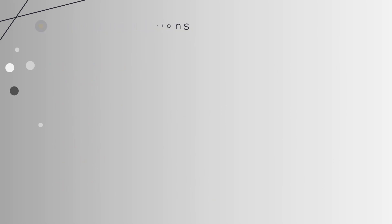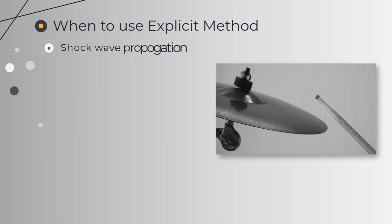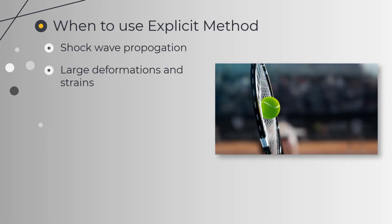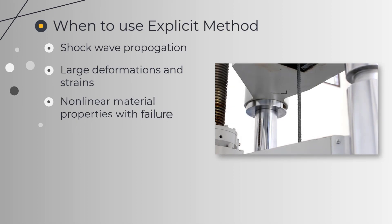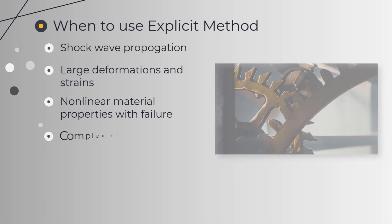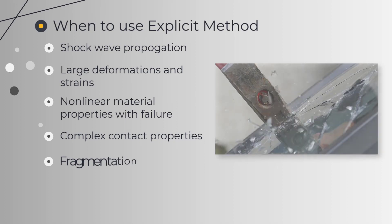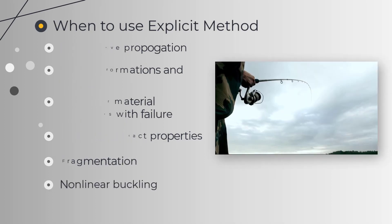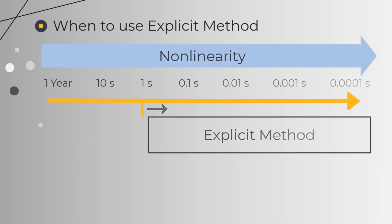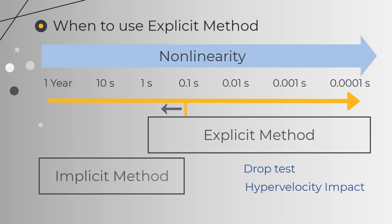The explicit method is more accurate and efficient for simulations involving shock wave propagation, large deformations and strains, non-linear material behavior with material failure, complex contact properties, fragmentation of the structure, and non-linear buckling. It is preferable to use for short time duration events involving high non-linearity such as a drop test and a hypervelocity impact problem. Whereas implicit is preferable for long duration with low non-linearity simulation problems such as creep.